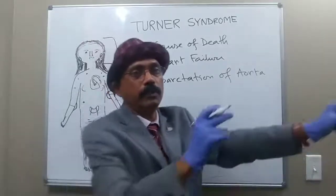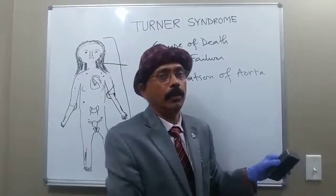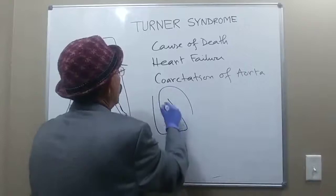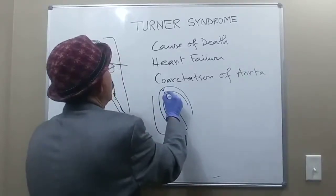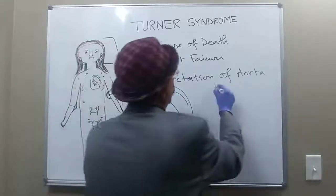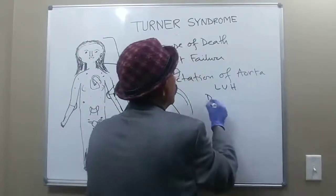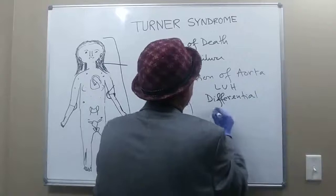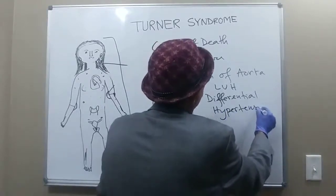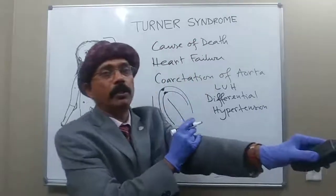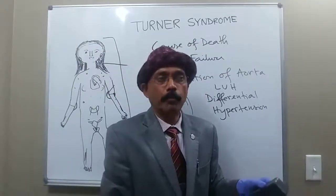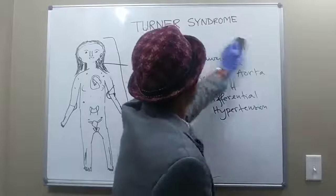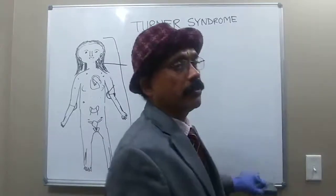In coarctation of the aorta, there is hypertension of the upper extremity and differential hypertension — meaning high blood pressure in the brachial artery but low blood pressure in the popliteal artery or lower limb arteries.